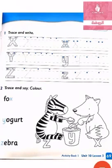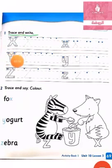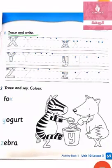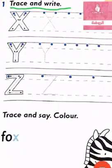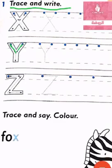Now, open your activity book page 69. We want to trace and write capital Y and small y. Let's start with capital Y. Now, I want to trace capital Y. From line one, slide down, stop on the middle. Again, slide down, stop on the middle. Down, stop on the third line.